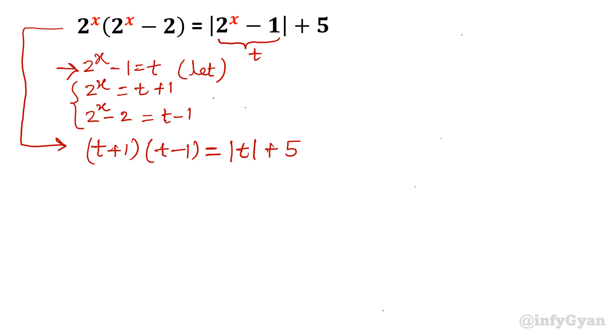Difference of squares a plus b, a minus b. I will write formula a square minus b square. So t square minus 1 is equal to mod t plus 5. Write all the terms to one side. So let me write in the left t square minus mod t minus 6 is equal to 0.